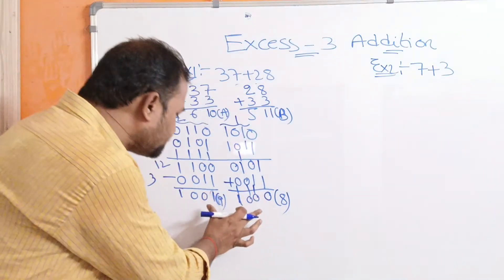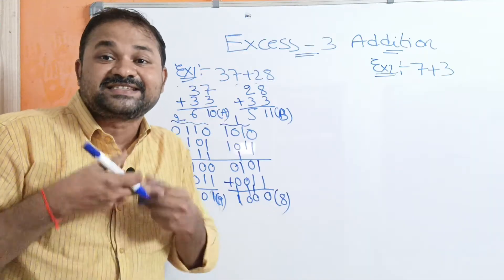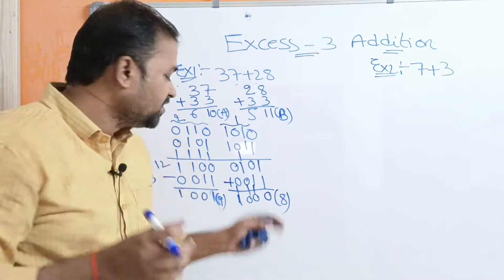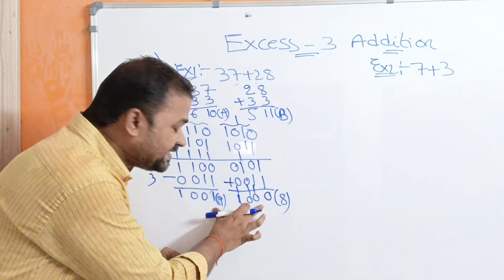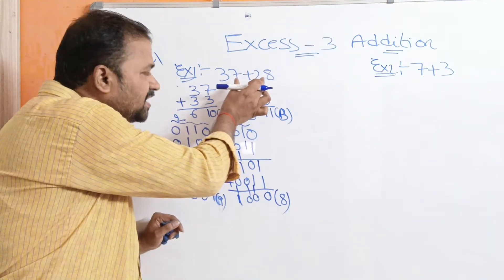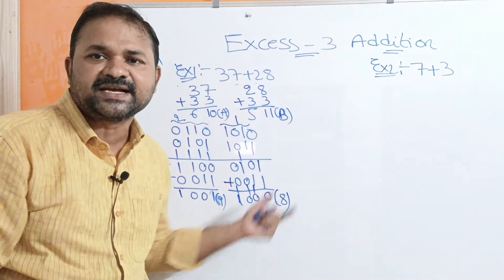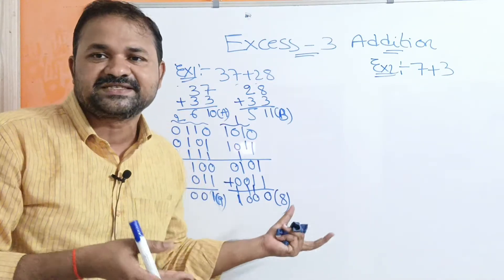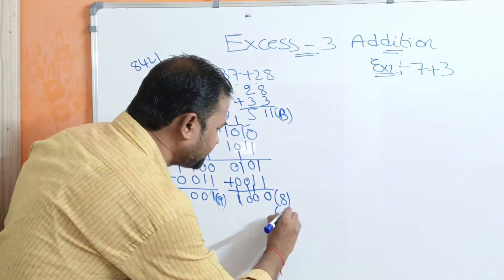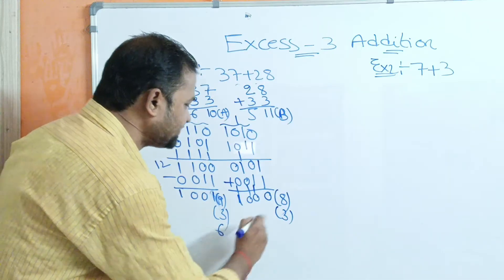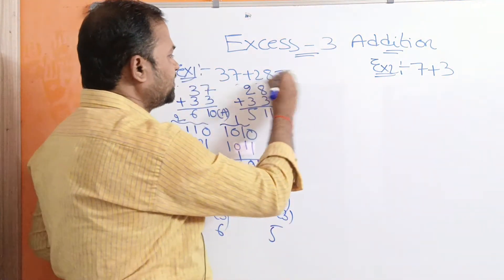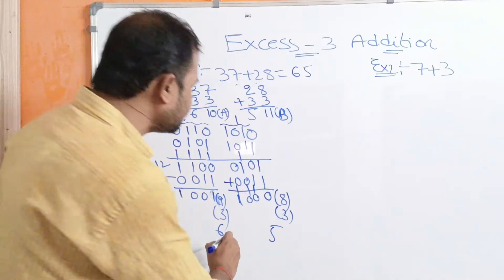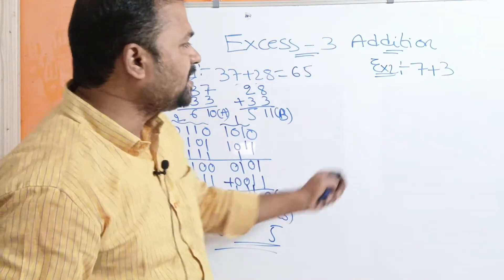The result is in XS3 format because we added two XS3 numbers. To get the decimal number, we subtract 3 from each group. So 9 minus 3 is 6, and 8 minus 3 is 5. The result is 65. And indeed, 7 plus 8 is 15 and 3 plus 2 plus 1 is 6, so 37 plus 28 equals 65. Correct!